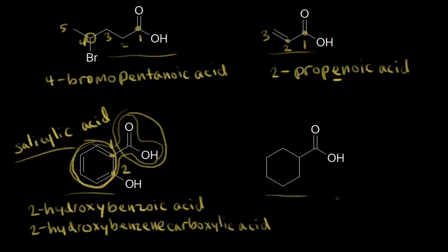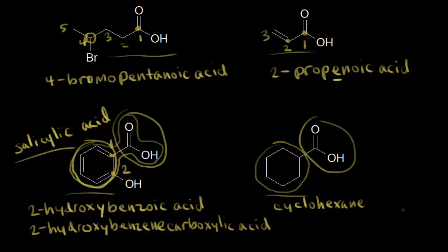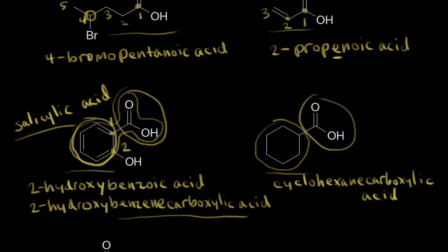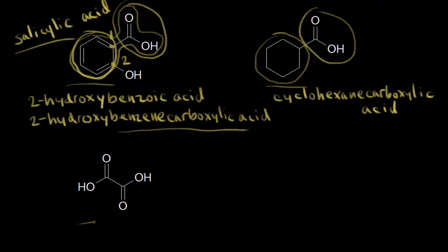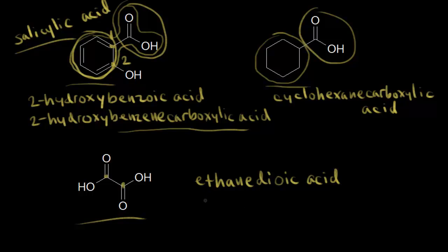Over here on the right, instead of a benzene ring we have a cyclohexane ring, so this would be cyclohexanecarboxylic acid. If you have two carboxylic acids in the same molecule, as we see here with two carbons, you start with ethane and use the prefix di-, giving ethane dioic acid as the IUPAC name. The common name for this molecule is oxalic acid.